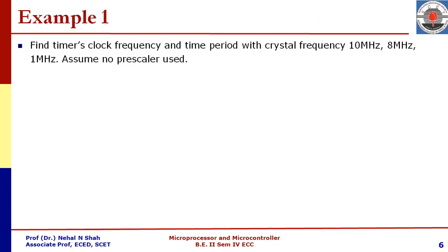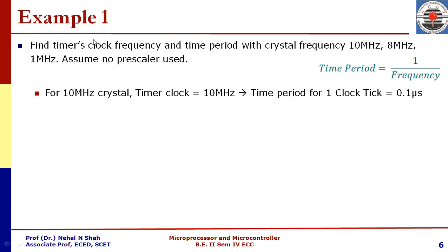Let us consider a few examples. Find timer's clock frequency and time period with crystal frequency 10 MHz, 8 MHz, and 1 MHz, and assume there is no prescaler used. As we know, we can identify time period based on equation: time period equals 1 divided by frequency. Here crystal frequency is equal to timer clock. If crystal frequency is 10 MHz, then timer clock is 10 MHz because no prescaler is used. In that case, time period for one clock tick will be 0.1 microsecond. For 8 MHz, time period for one clock tick is 0.125 microsecond. In case of 1 MHz clock, period is 1 microsecond.